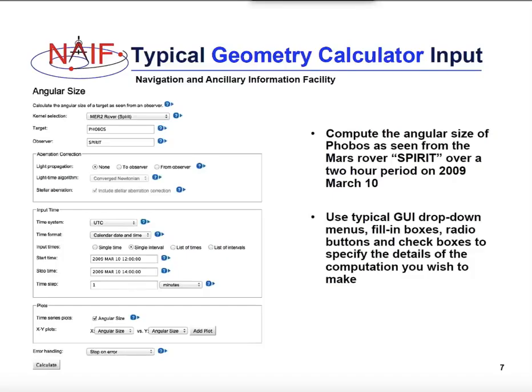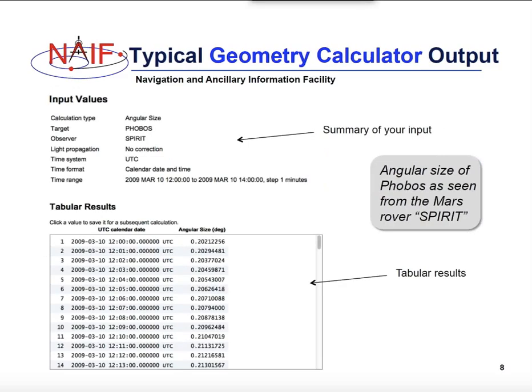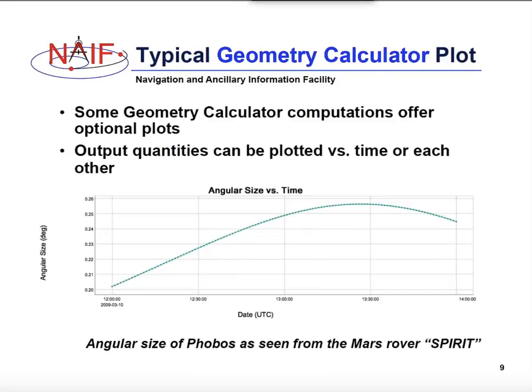Pulling up one of these computations, such as angular size, shows a set of menus in which users can select kernels, specify other inputs such as time and aberration corrections. After clicking the Calculate button at the bottom of the page, they will get an echo of the input values and tabular results with the quantity they're interested in, in a scrollable window with items tagged with time. They could also get a plot of that quantity versus time or versus some other quantity.